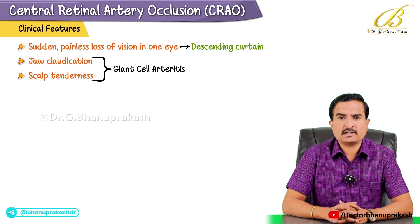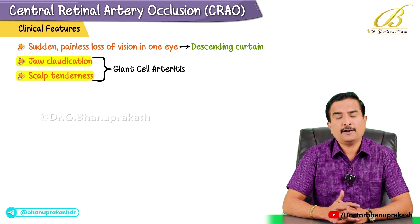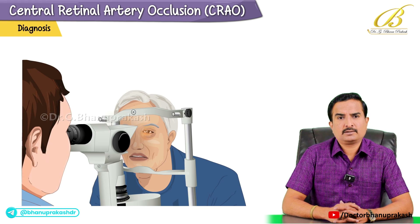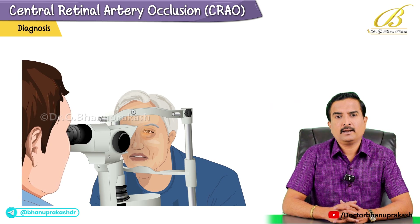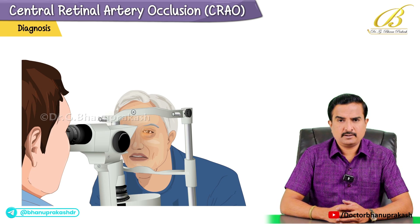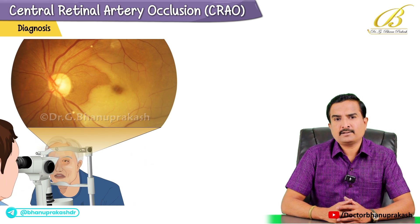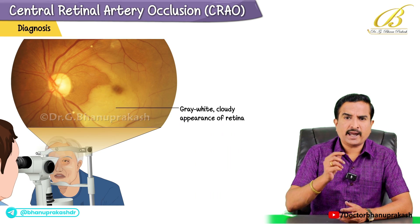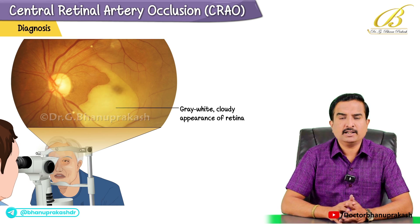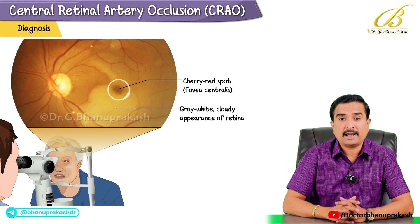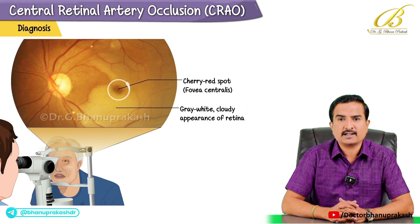Only extra features like jaw claudication and scalp tenderness are seen if the etiology is giant cell arteritis. Diagnosis begins with a comprehensive eye examination including a detailed fundoscopic exam. Key findings include diffuse retinal ischemia with a grey-white cloudy appearance of the retina, and a cherry red spot at the center of the macula known as fovea centralis.